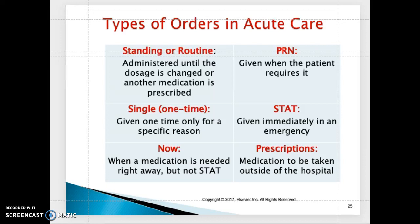Then we have the stat order, which is given immediately in an emergency situation. For example, a patient experiencing angina pain — the doctor may give an order for nitroglycerin 0.4 milligrams sublingually stat.